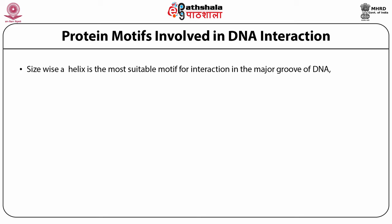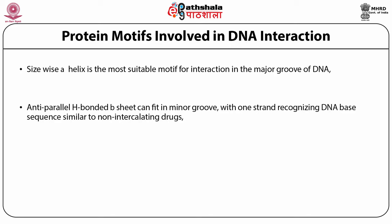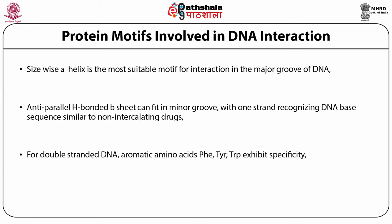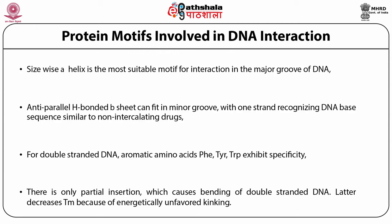Protein motifs involved in DNA interaction: size-wise, an alpha helix is the most suitable motif for interaction in the major groove of DNA. An antiparallel H-bonded beta sheet can fit in the minor groove with one strand recognizing DNA base sequence, similar to non-intercalating drugs. For double-stranded DNA, aromatic amino acids — phenylalanine, tyrosine, tryptophan — exhibit specificity. There is only partial insertion of these residues, which causes bending of double-stranded DNA, decreasing Tm because of energetically favored stacking.